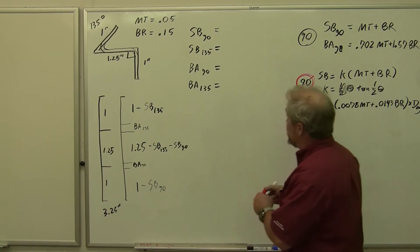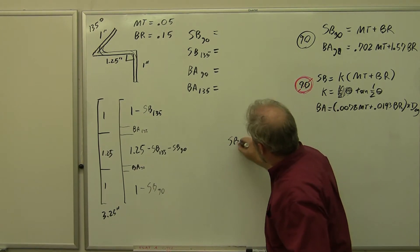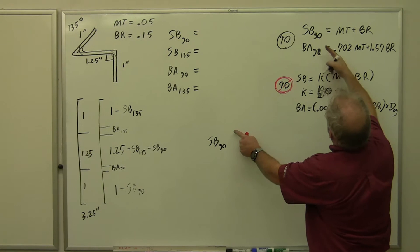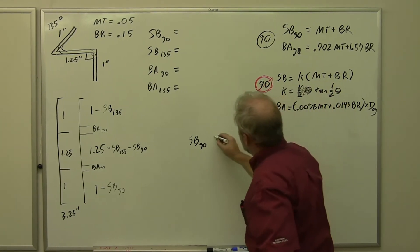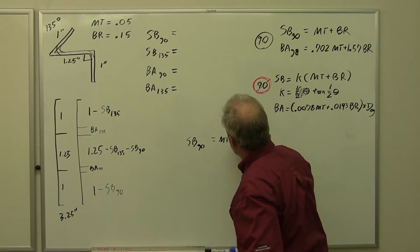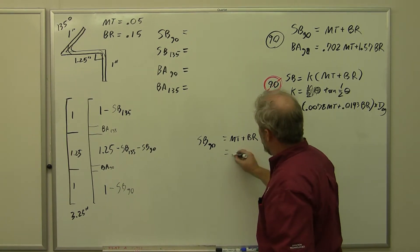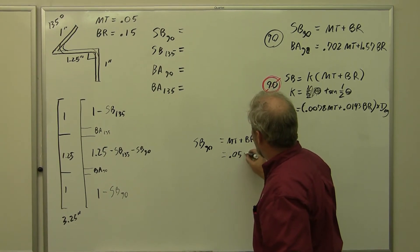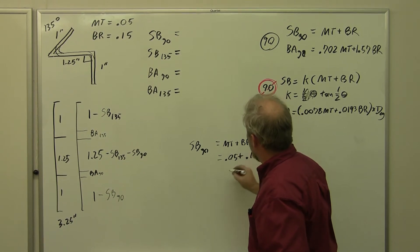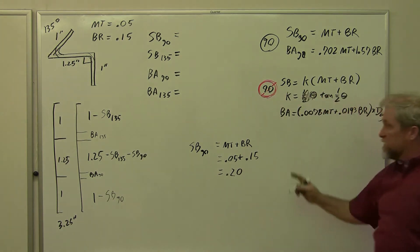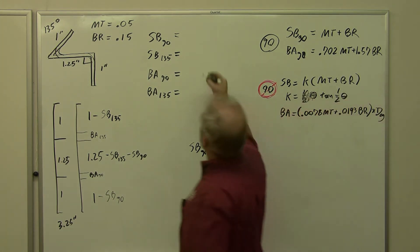Let's start with the setback 90. Our setback 90 equals material thickness plus bend radius, which is equal to 0.05 plus 0.15, which equals 0.20. Setback 90 is 0.20.